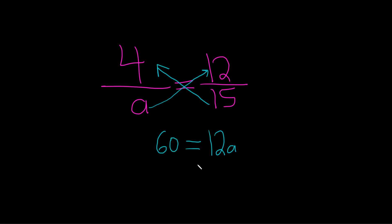To solve for A, notice it's being multiplied by 12. So to undo that, we'll do the inverse operation of multiplication, which is division. So I'm going to draw a little line here and put the 12 on both sides.